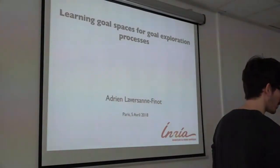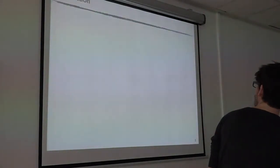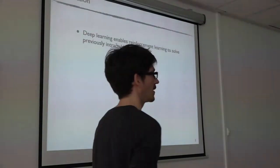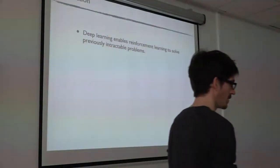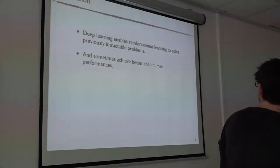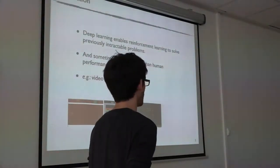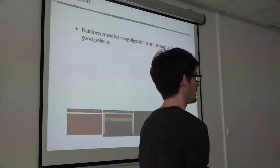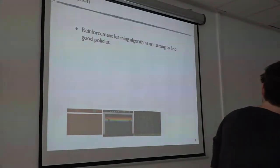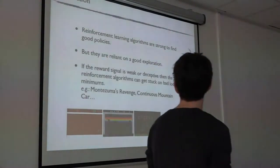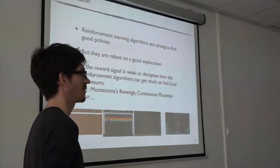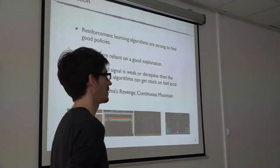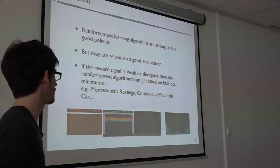Before presenting my work, I will start with a brief introduction to the context. You all know that deep learning — the use of neural networks as function approximators — enables deep reinforcement learning algorithms to solve many previously intractable problems, sometimes achieving better-than-human performance in environments such as video games or classical games such as Go.